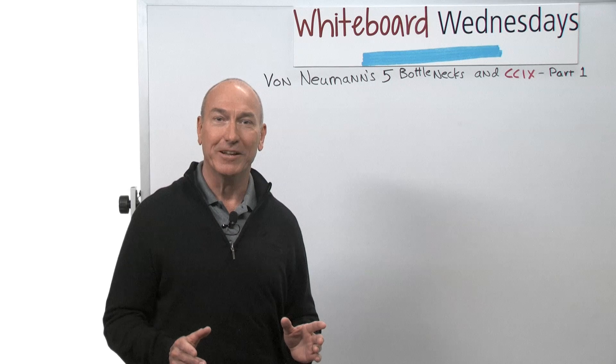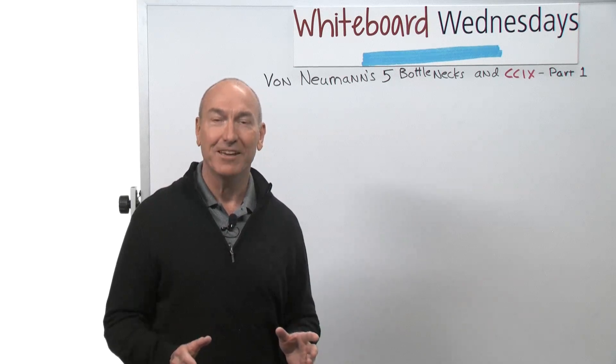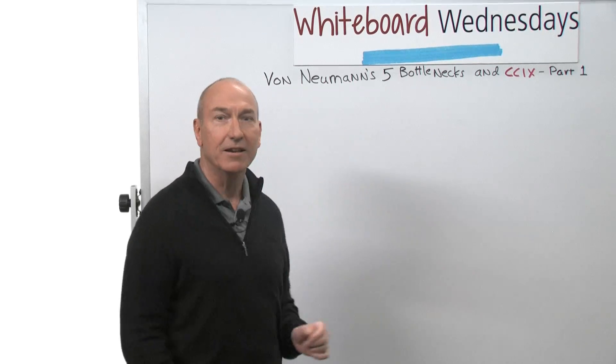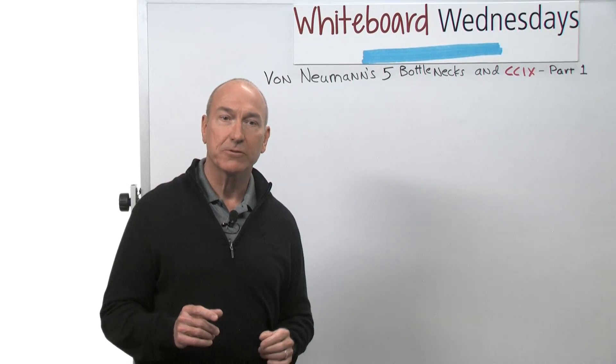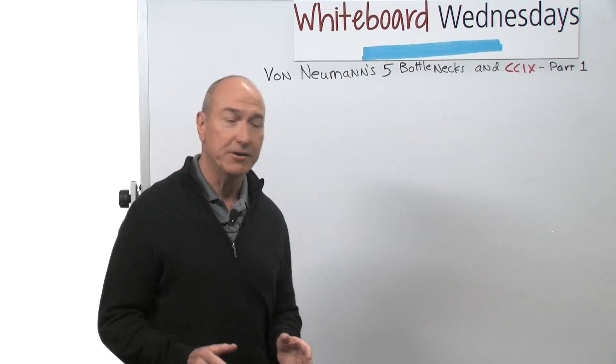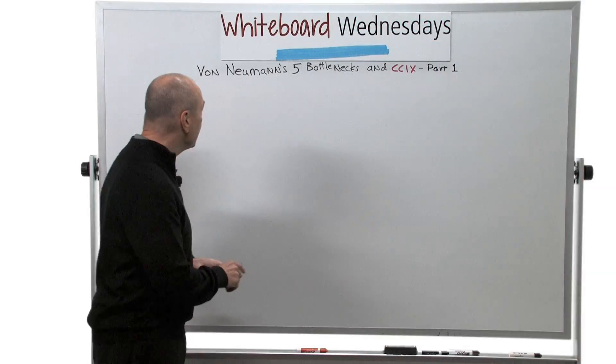It started back in the 40s, in 1945, when a mathematician and scientist named John von Neumann came up with the architecture for computers that we use even today. It's called the von Neumann architecture, and it looks like this.